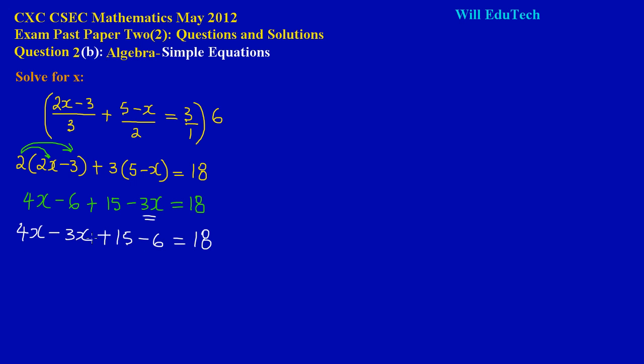So 4x minus 3x, that will leave us with 1, so we have x there. And 15 minus 6 here will leave us with a positive 9, and that is equal to 18.